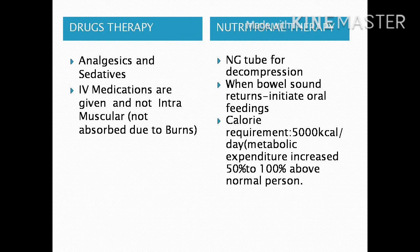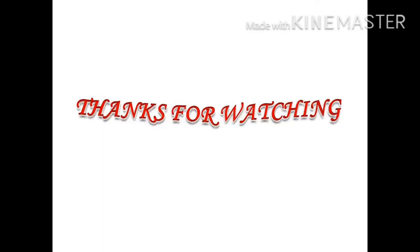For nutritional therapy, initiate nasogastric tube feeding for decompression. When bowel sounds return, oral feeding can begin. Burns patients are in a hypermetabolic state, requiring approximately 5,000 kilocalories per day due to protein losses. Metabolic expenditure is increased 50% to 100% above normal. This concludes the emergent phase; the acute phase and rehabilitative phase will be covered in Part 2.